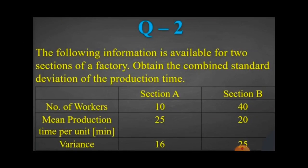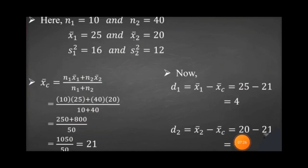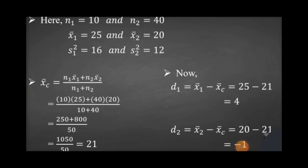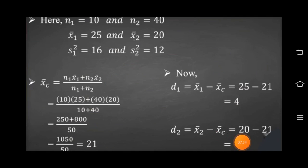Sum number 2: The following information is available for two sections of a factory. Obtain the combined standard deviation of the production time. Given information: n1 equals 10, n2 equals 40, x-bar1 equals 25, x-bar2 equals 20, s1 squared equals 16, s2 squared equals 12.